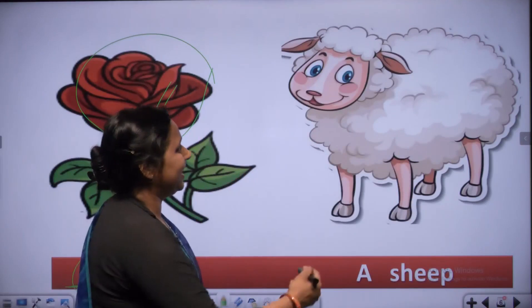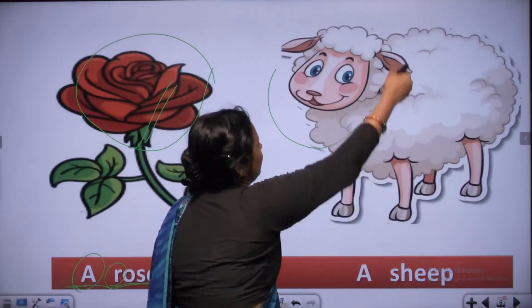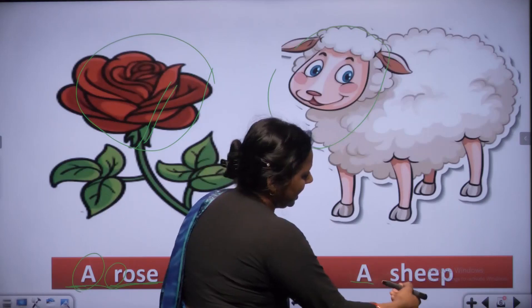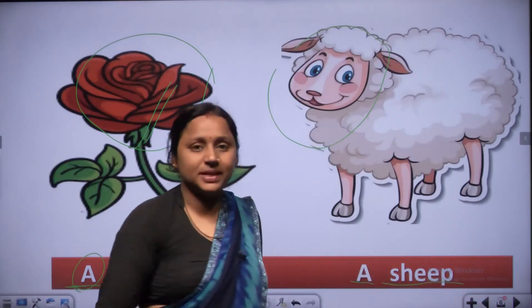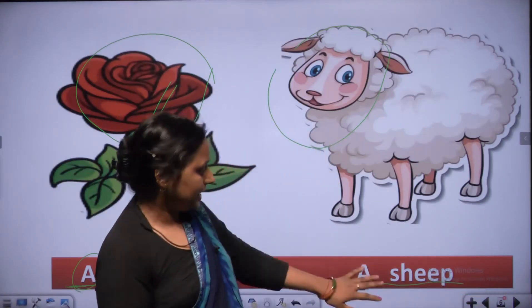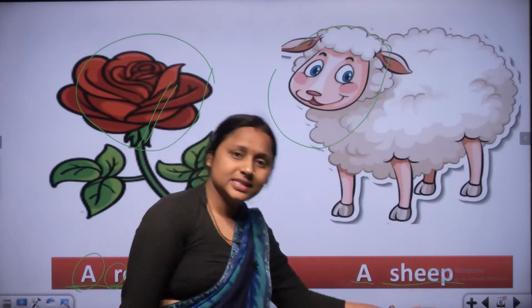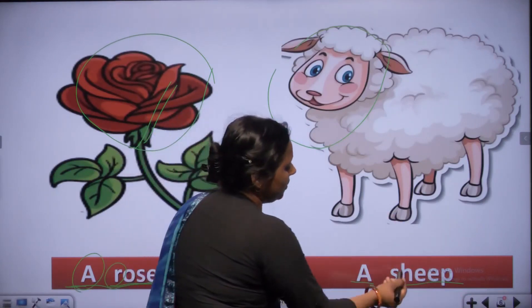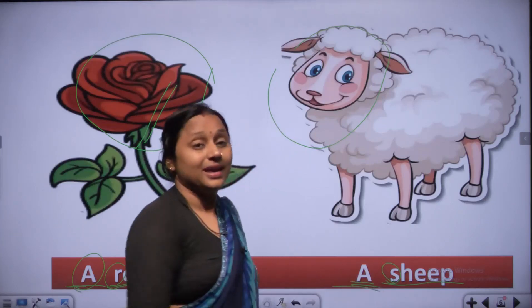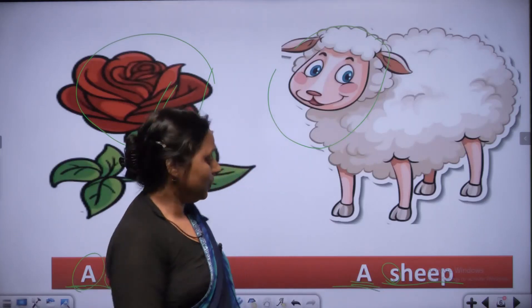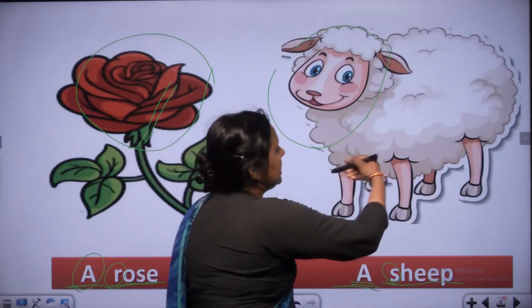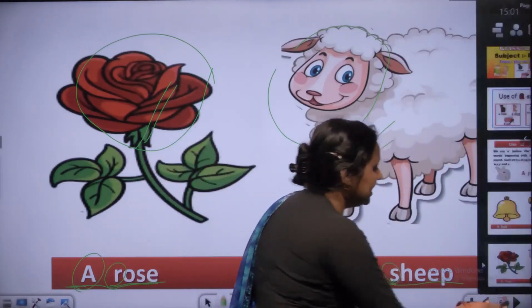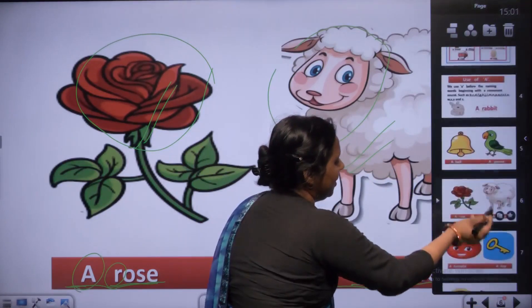Then this is A, S, H, double E, P - sheep. A sheep. S is consonant, so we use A. This is a pet animal - sheep.